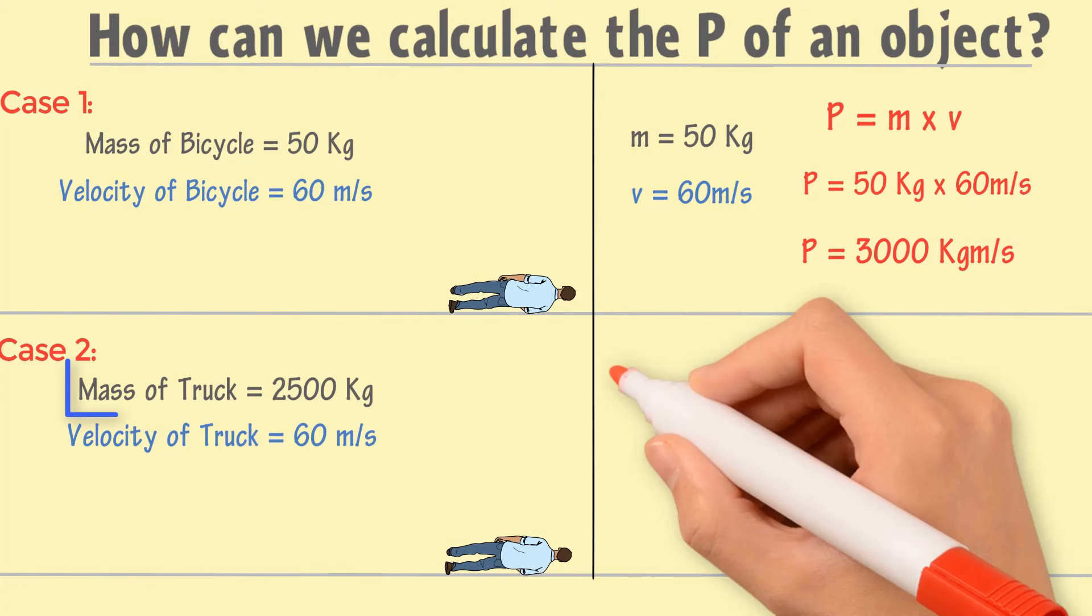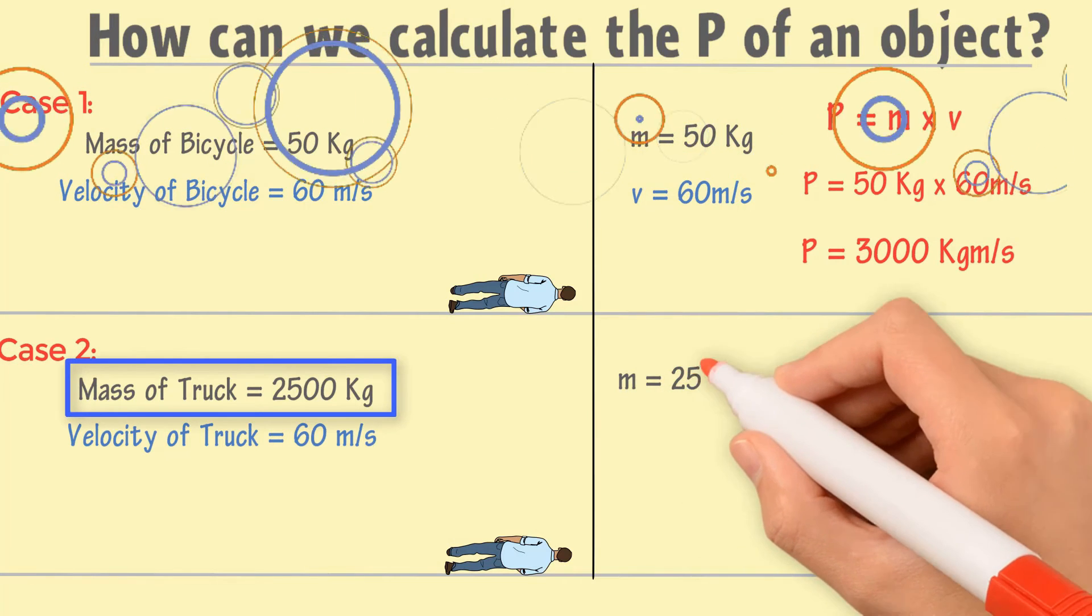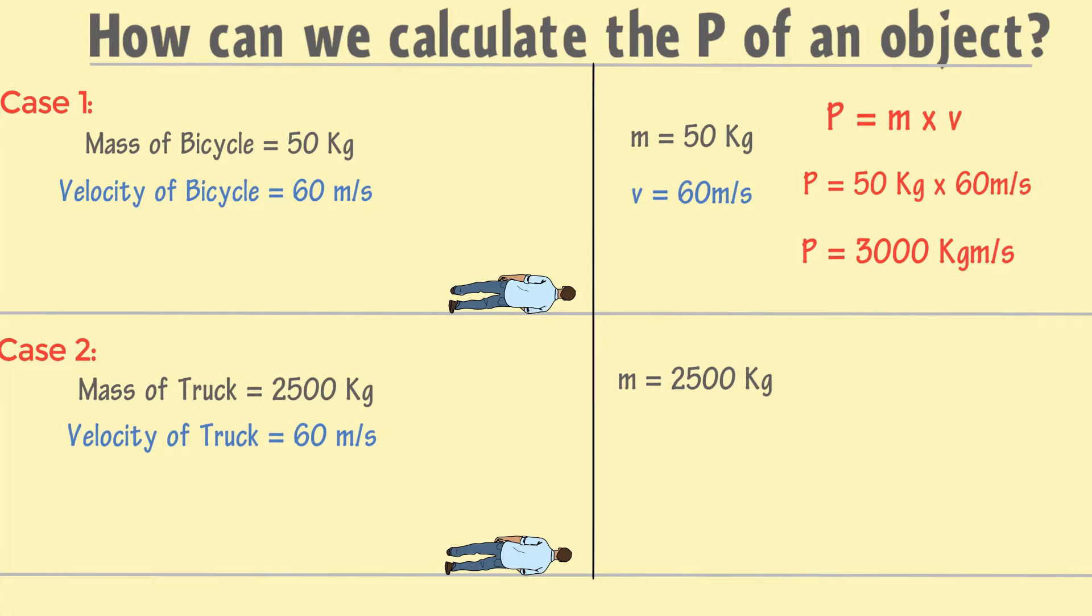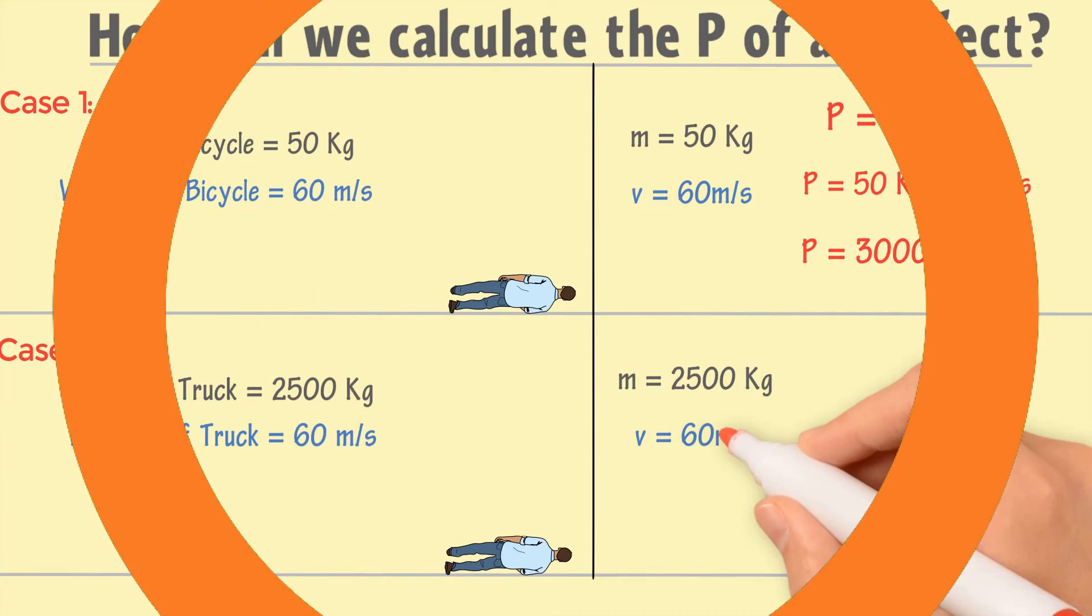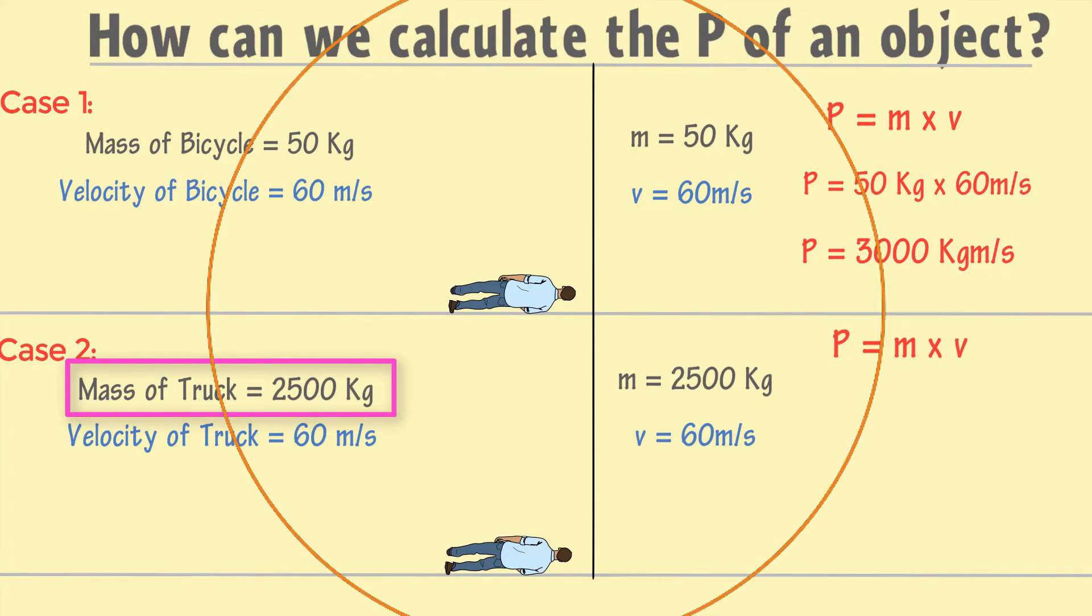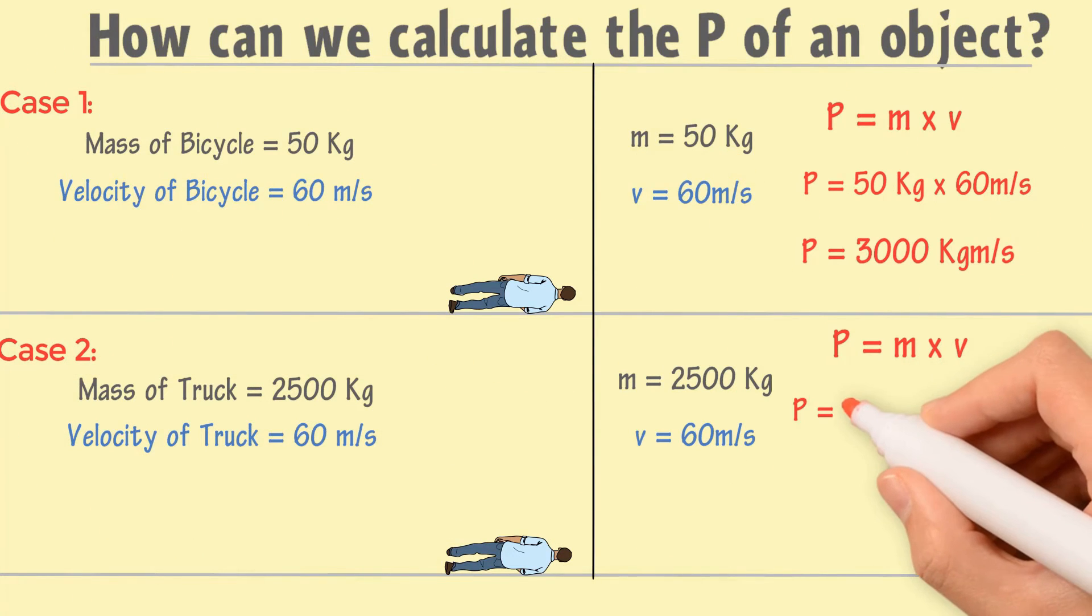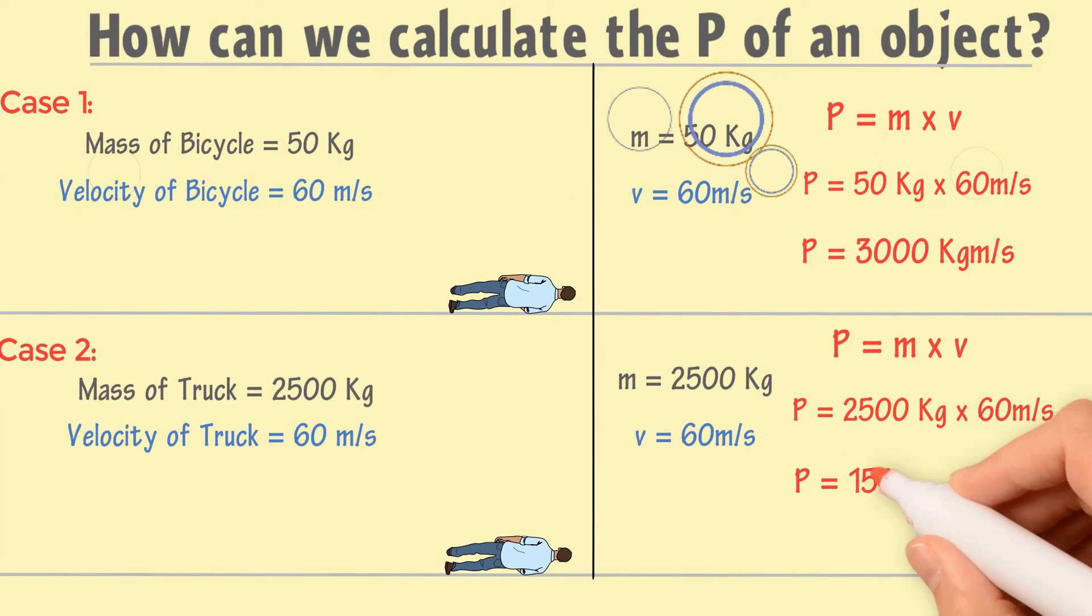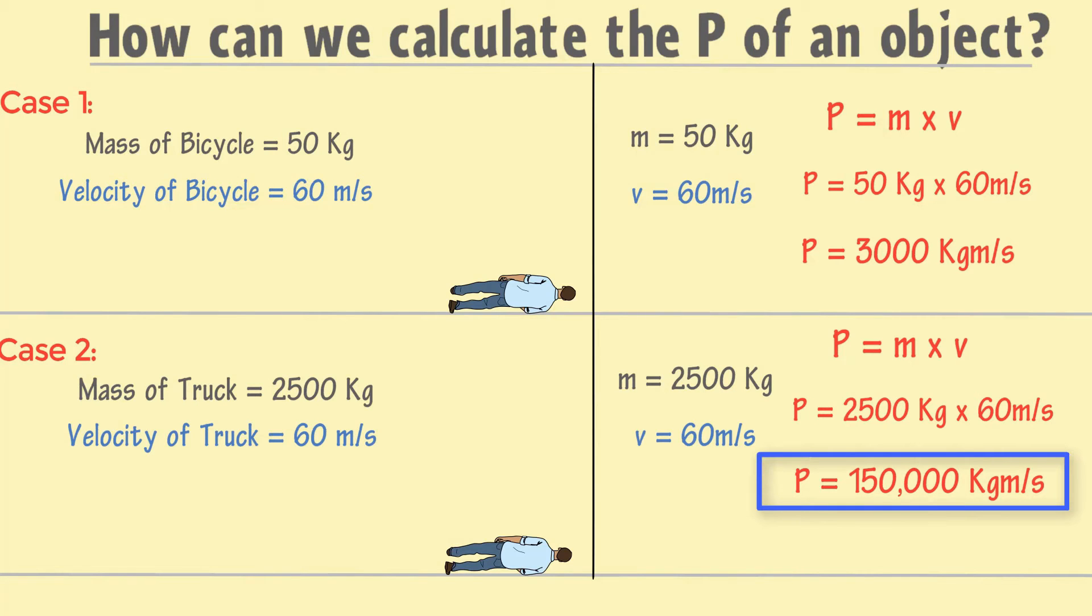In case 2, the mass of truck m is equal to 2500 kg, while the velocity of the truck is 60 meter per second. Hence, the momentum of truck P is equal to mass of the truck times velocity of the truck. Thus, P equals 2500 kg times 60 meter per second. We get P equals 150,000 kg meter per second. So, the momentum of truck is 150,000 kg meter per second.